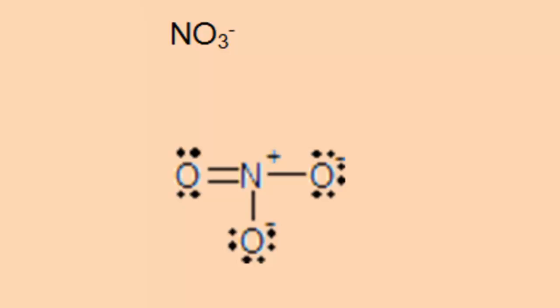The next example is nitrate. The Lewis structure for nitrate is shown here. We have three oxygens. Two of them have a single bond, one of them has a double bond.